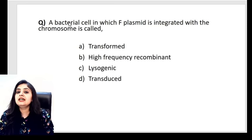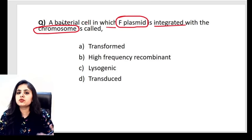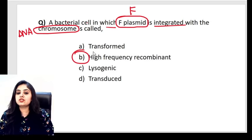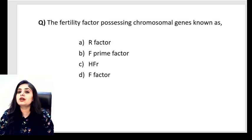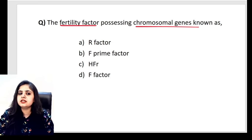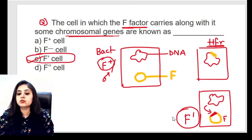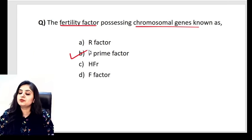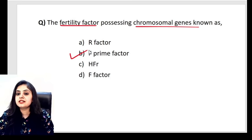One last practice question: Fertility factor possessing chromosomal genes is known as? Again, we call it the F prime factor — fertility factor carrying chromosomal genes is F′. Having finished bacterial genetics, we move on to the second major topic of today's session: sterilization and disinfection.